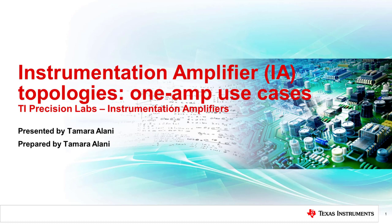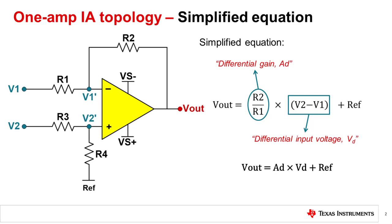Hello, and welcome to the lecture for the TI Precision Lab discussing instrumentation amplifier topologies, specifically 1-amp IAs. In the last lecture, we derived the simplified equation for a 1-amp IA. Remember that this simplified equation relies on the matching of R1 to R3 and R2 to R4. The rest of this lecture will utilize this topology across a few different use cases.